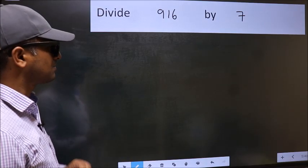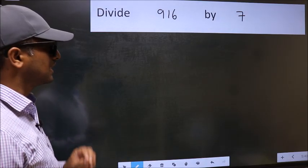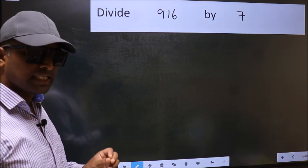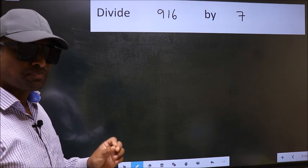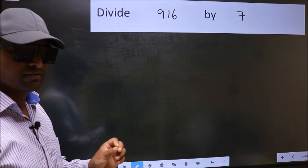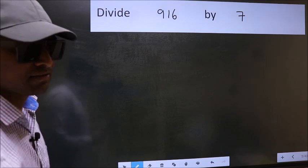Divide 916 by 7. While doing this division, many do this mistake. What is the mistake that they do? I will let you know. But before that, we should frame it in this way.